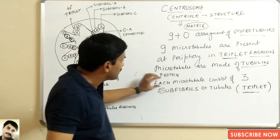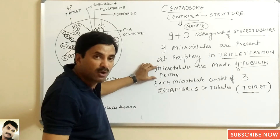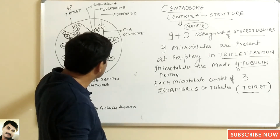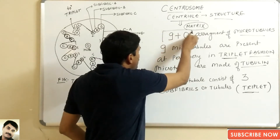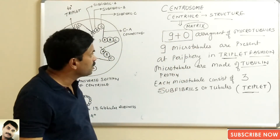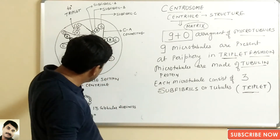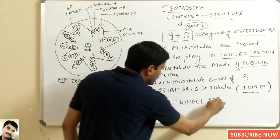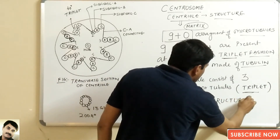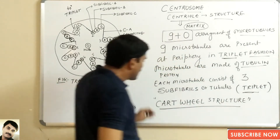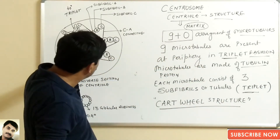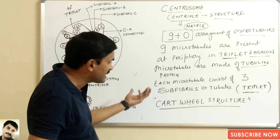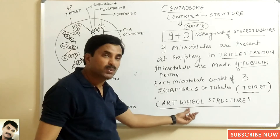The microtubules are made up of tubulin protein. In the center, a hub is present — meaning no microtubule is present at the center. This arrangement is called the 9+0 arrangement. This structure looks like a cartwheel structure, and this is sometimes asked: which organelle has a cartwheel structure? The answer is the centriole.